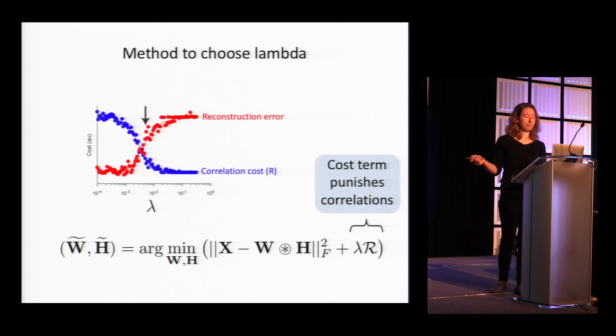We also wondered how should we choose the strength of our regularization term. There's really a trade-off here between how well we're fitting our data and how correlated our reconstructions are. We tested on a lot of simulated data where we knew the ground truth and found that if we picked a value of lambda that was slightly over this crossover point of a trade-off between reconstruction error and correlation cost, then we would get the right answer for the right number of sequences.